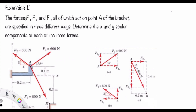Now let's go to the exercise. In this exercise we have three forces: F1, F2, and F3, where all three forces act on point A on the bracket — they have the same point of application. They are specified in different ways. We need to determine the x and y scalar components of each of the three forces. We break it down into three parts: a, b, and c, solving F1, F2, and F3 separately.